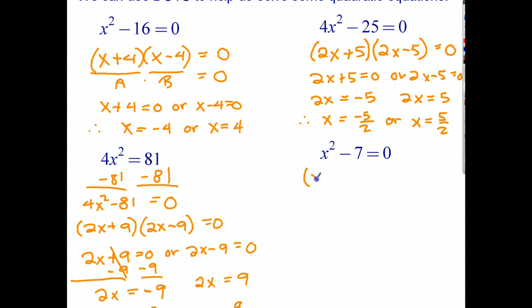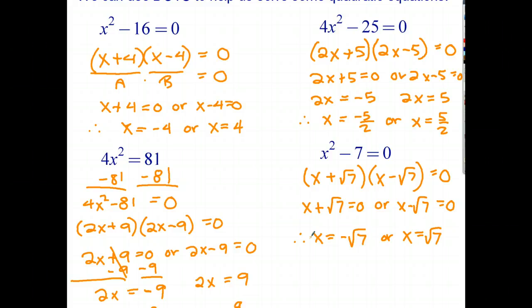So in fact I could factorize that as x plus the square root of 7 times x minus the square root of 7 equals 0, and therefore x plus the square root of 7 equals 0 or x minus the square root of 7 equals 0, and my two solutions are x equals negative square root of 7 or x equals positive the square root of 7. So there is a way of solving some quadratic equations using the difference of two squares.